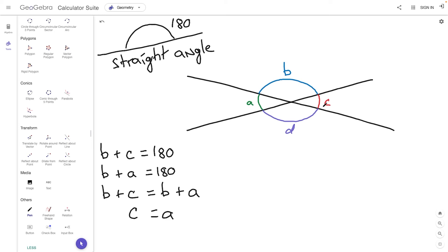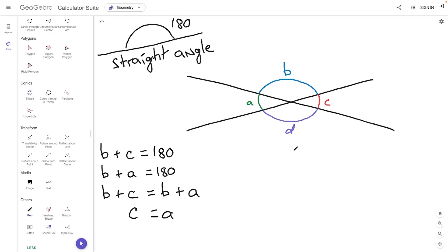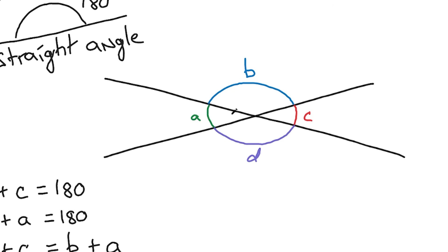You might have noticed that we found angle C and angle A are equal, but what about angle D and B? Are those also equal? Let's try doing the same thing we did for A and C, but for B and D. We started with angle B, and then we included the adjacent angles to make our straight angles: B plus A gave a straight angle, and B plus C gave a straight angle, and we showed those adjacent angles are equal. So to show B and D are equal, we note that B and D both have the same two adjacent angles: A and C.